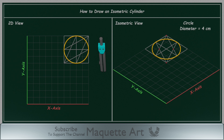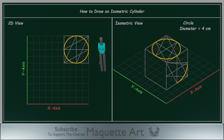Now I will repeat those steps, but this time I will draw the circle in 2 different positions on those 2 faces. Those are the 3 different positions of a circle that you will need in isometric drawings, and the method is the same in all of them.